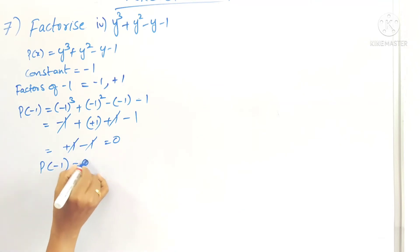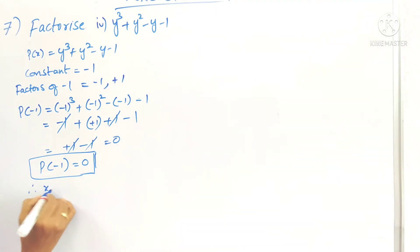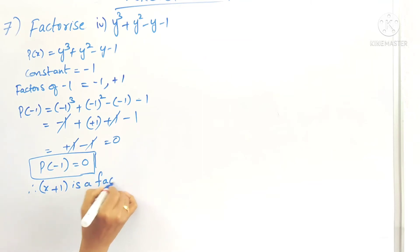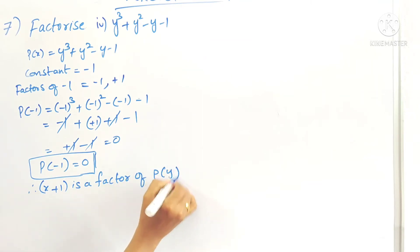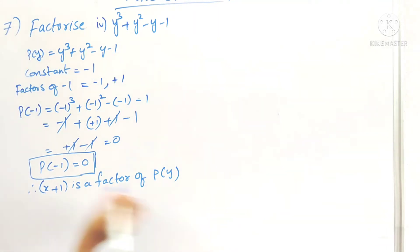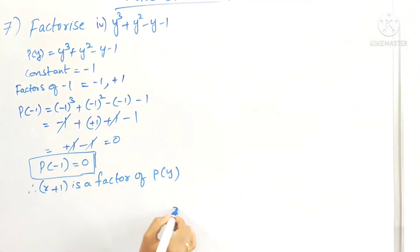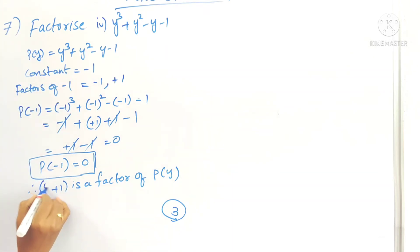So p(-1) equals 0. Since p(-1) is 0, (y + 1) is a factor of p(y), the given polynomial in y. Now, the degree is 3, so there are three factors in total. We have found only one factor so far.